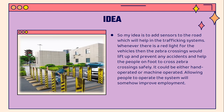My idea is to add sensors to the road which will help in the trafficking systems. Whenever there is a red light for the vehicles, the Zebra Crossings would lift up and prevent any accidents, and help people on foot to cross Zebra Crossings safely. It could be either hand operated or machine operated. Also, allowing people to operate the system will somehow improve employment.